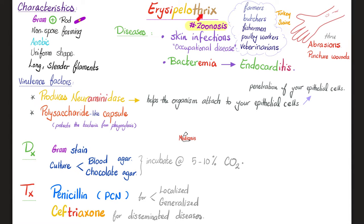Erysipelothrix causes a zoonotic disease. You need a cut in your skin first, and then if you're a butcher, farmer, fisherman, poultry worker, veterinarian, or work with turkey or swine, the bacteria will jump from the animal to your traumatized, open skin. It can spread deeper, causing bacteremia, septicemia, and affect the endocardium of the heart, including valves.